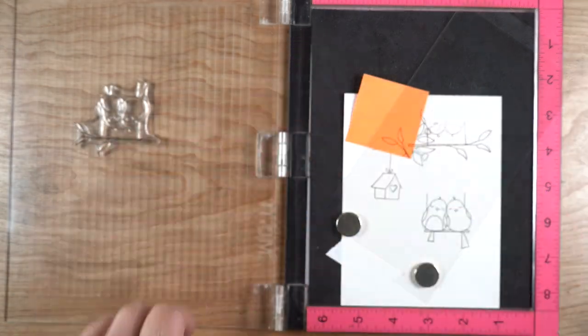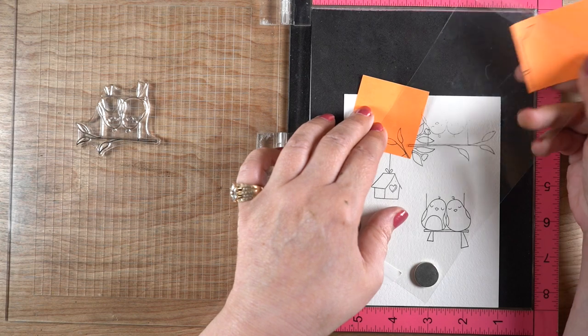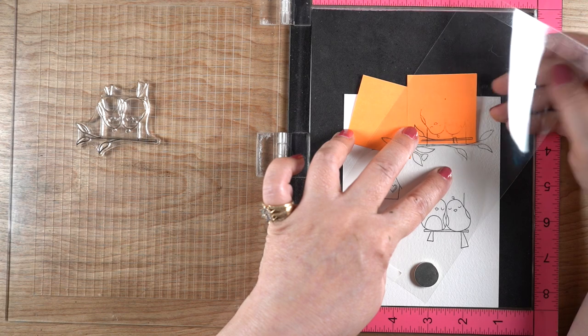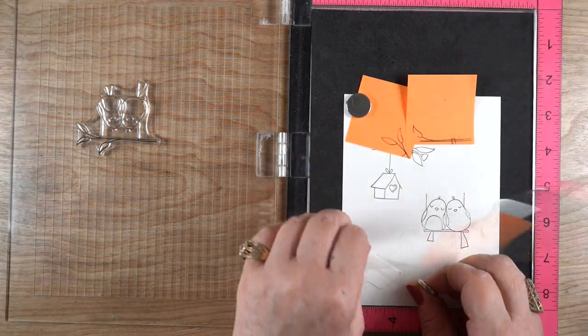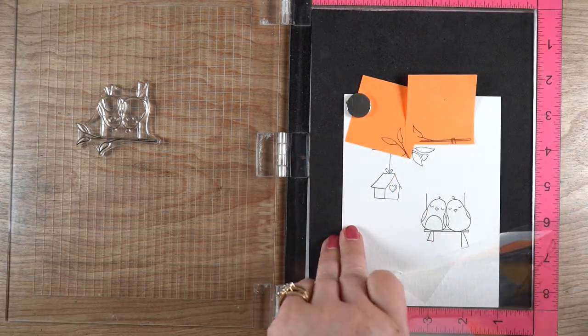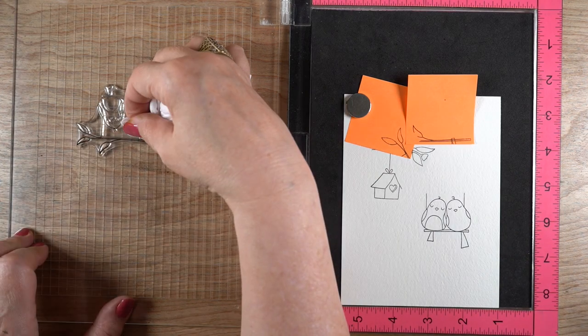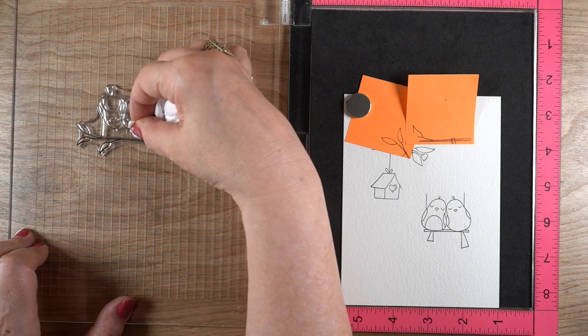But I can stick these underneath of the plastic and just kind of line them up to block off the portions that I don't want to have. So there's swing and birds up above this time and I want to get them gone. So then all I have to do is ink it up and be ready to go.